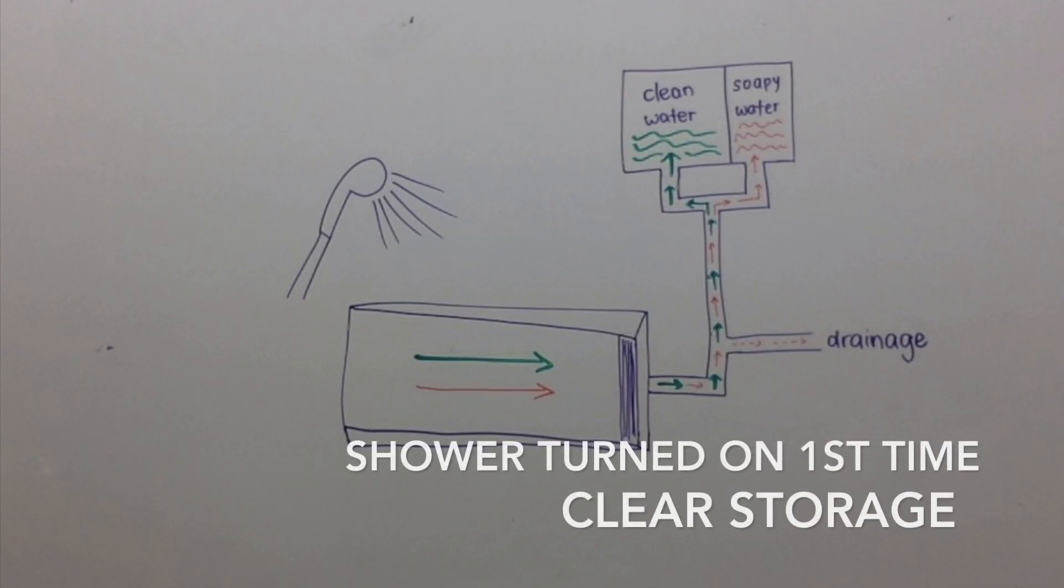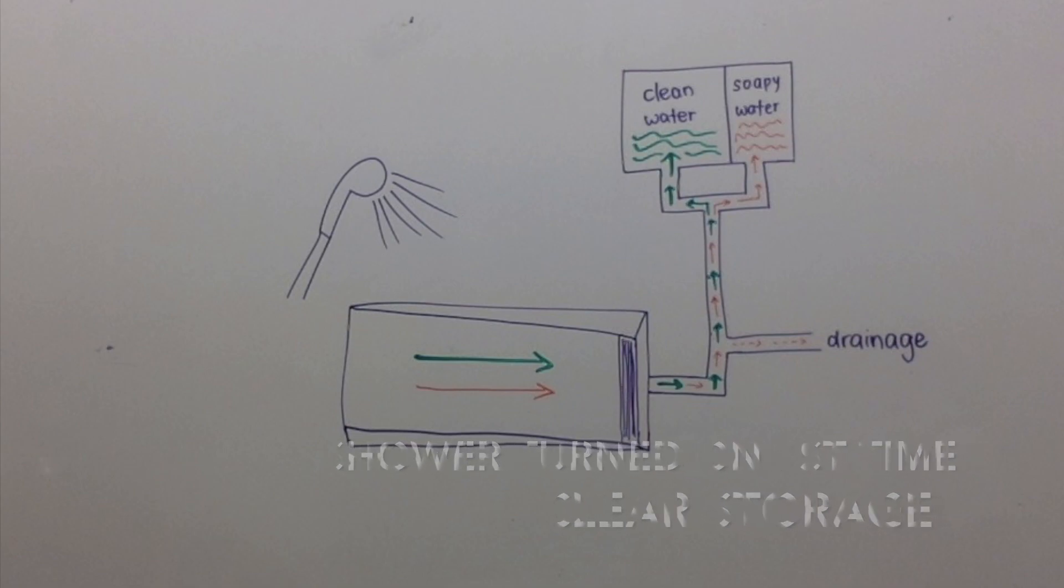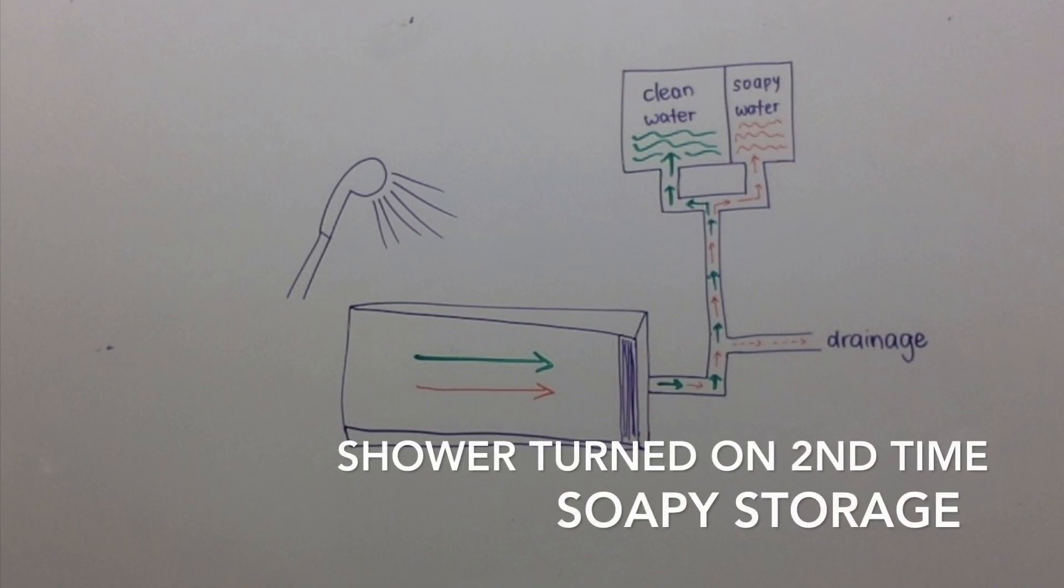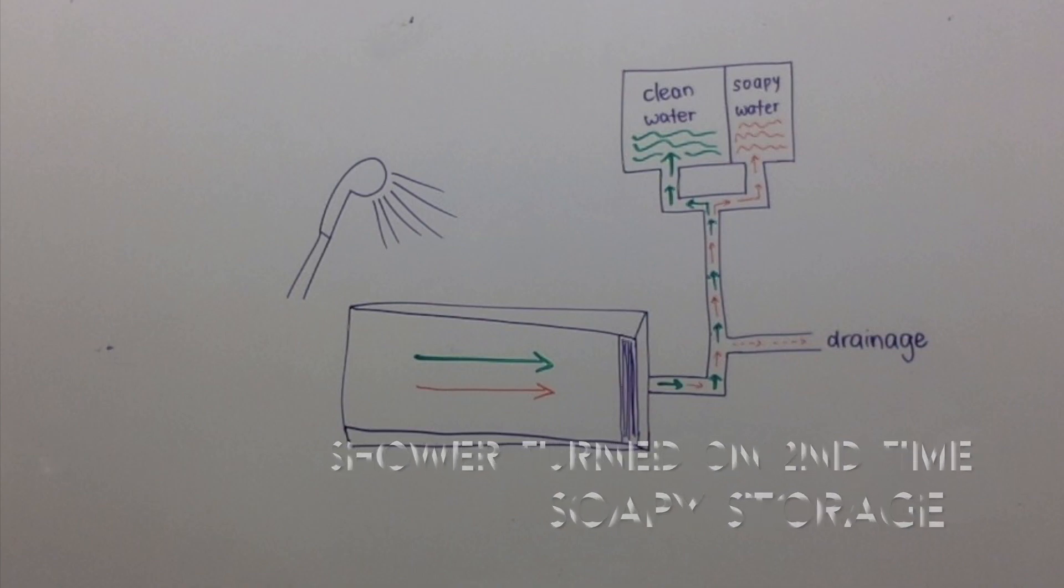When the shower is turned on for the first time, the water will be stored in the clear storage tank. When the shower is turned on for the second time, the water collected over the first 30 seconds will be stored separately due to the high soap content.